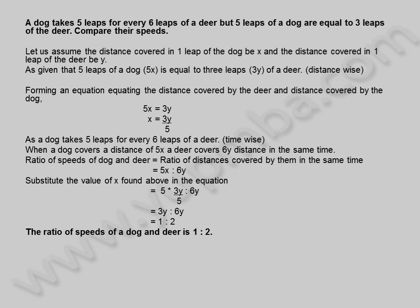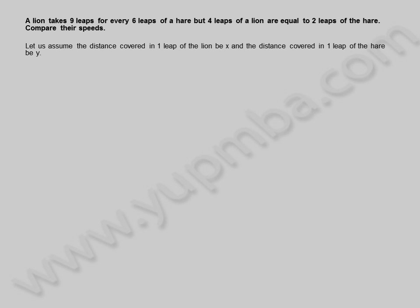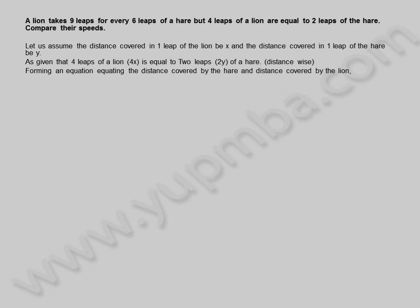Let us see another example. A lion takes 9 leaps for every 6 leaps of a hare. But 4 leaps of a lion are equal to 2 leaps of the hare. Compare their speeds. Let us assume the distance covered in 1 leap of the lion be x and the distance covered in 1 leap of the hare be y. As given that 4 leaps of a lion, 4x, is equal to 2 leaps, 2y, of a hare — distance wise. Forming an equation equating the distances covered.